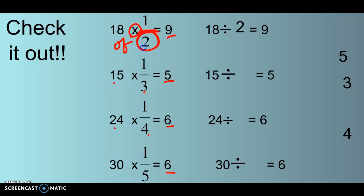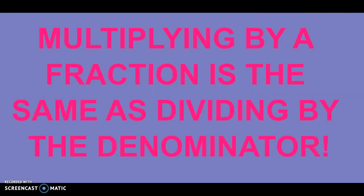So multiplying by a fraction here ends up being the same - we've said this before - it ends up being the same as just dividing by that denominator. Right? 18 divided by 2 would give me the same answer. Or here 15 times a third is the same as 15 being divided by 3. Or 24 times one fourth, a fourth of 24 is the same as saying 24 divided by 4. Or one fifth of 30 is the same as 30 being divided by 5. So we're going to remember that and use it a lot in the rest of this chapter. Fill in the blank on your paper. Multiplying by a fraction is the same as dividing by that denominator. It's something we've already been doing but we're going to use it a lot.